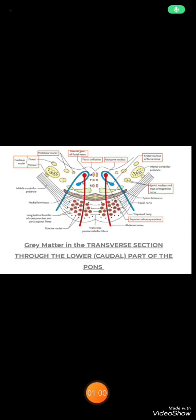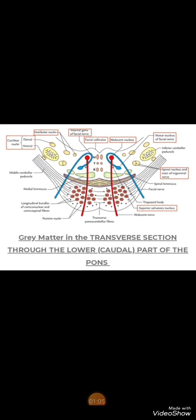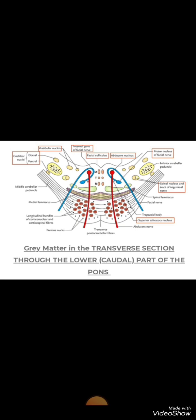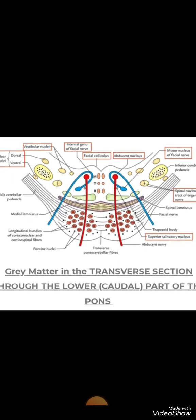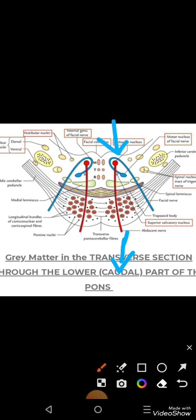Now we're going to learn the transverse section of the pons, its caudal part or lower part, which is present at the level of facial colliculus. For this, first we have to learn the various parts. That was the basilar side or ventral side of the pons. So that is the posterior surface of the pons.